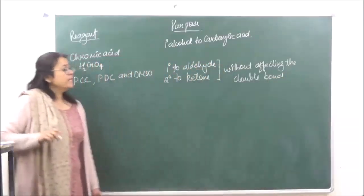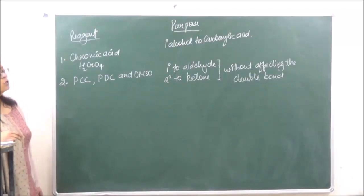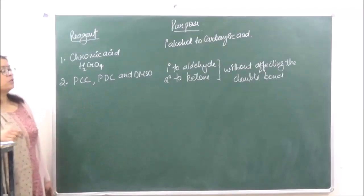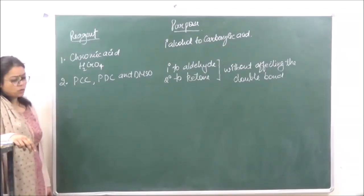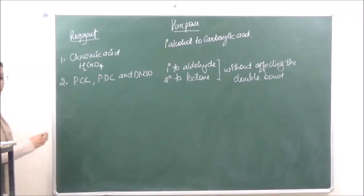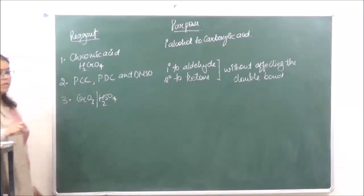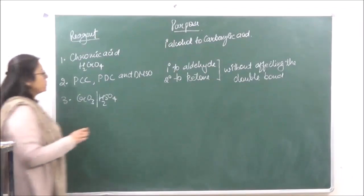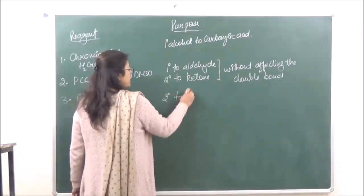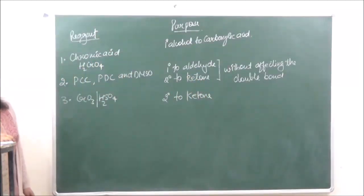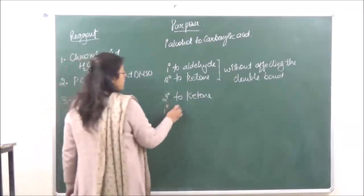Second, we have PCC (pyridinium chlorochromate) and PDC (pyridinium dichromate), along with DMSO. These convert 1° alcohol to aldehyde and 2° alcohol to ketone, without affecting the double bond. This is important — if there is a double bond or triple bond present and you are converting 1° to aldehyde or 2° to ketone, the reagents to use are PCC, PDC, or DMSO.